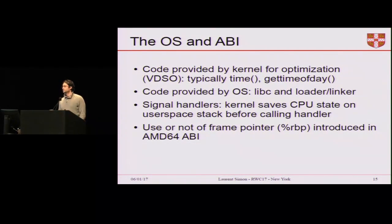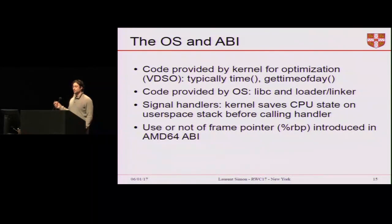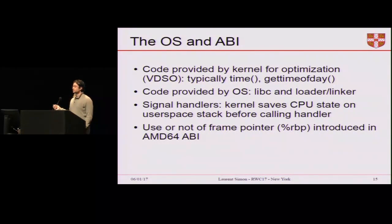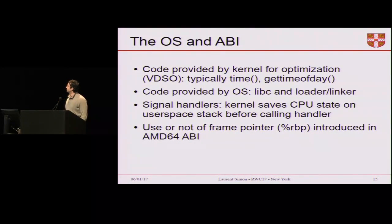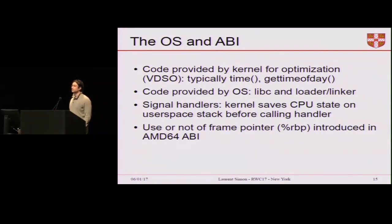There's a large amount of code provided by the platform which we can't instrument at compile time of our user space program — typically libc and the loader/linker, and also a small piece of kernel code called the VDSO, which is mapped into the user space program at startup. Signal handlers can also be problematic: before the kernel jumps into your signal handler, it pushes the current CPU state onto the user space stack — if you're in the middle of a decryption routine, that likely contains a lot of sensitive data. We also need to be careful about registers; for example, the RBP register, originally used as a frame pointer, can also store data on 64-bit machines and may contain sensitive data.